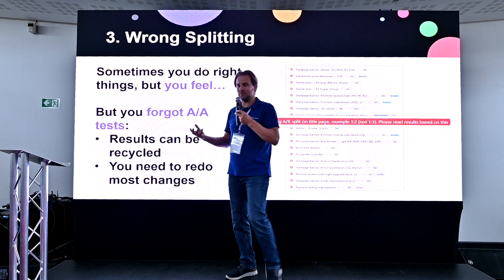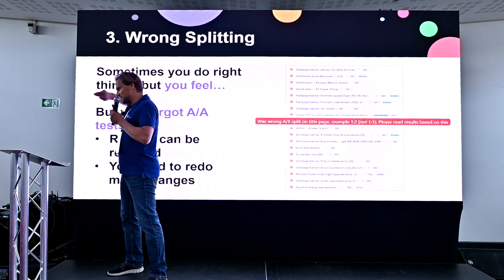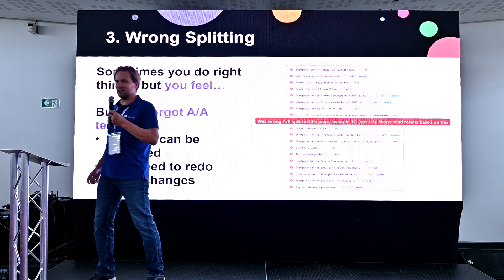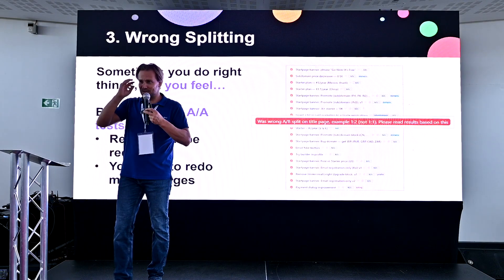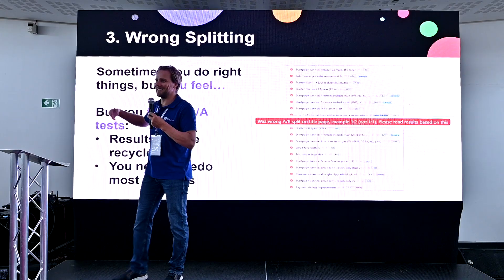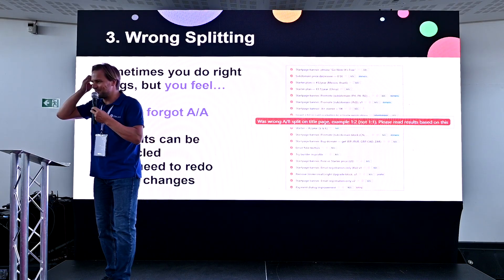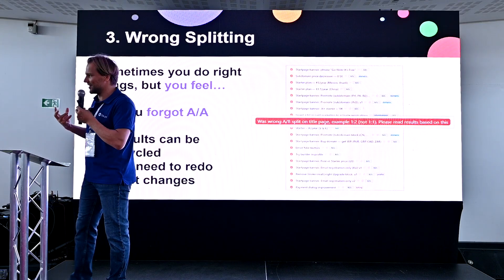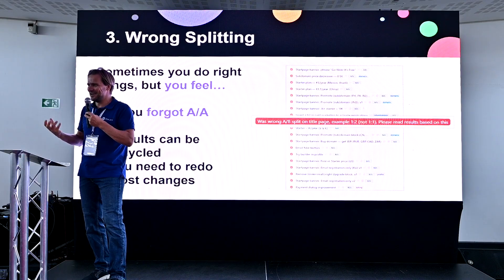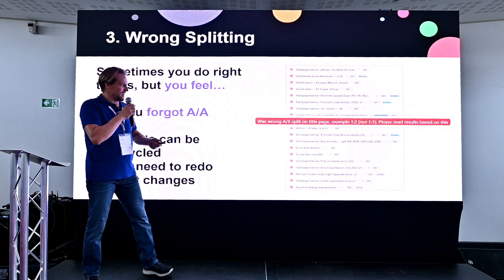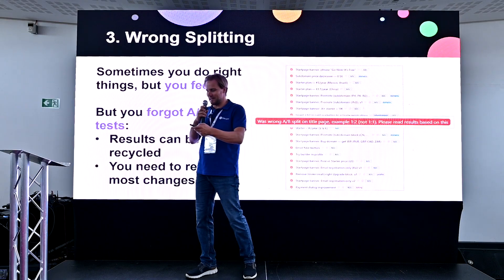So you come to a conference and say 'AI website builder works, it's perfect, it's our future.' Then two months later you come back to the same team and say 'Sorry, it was an error — AI doesn't work.' You need to somehow remove this wrong information from your mind and redo every single test.